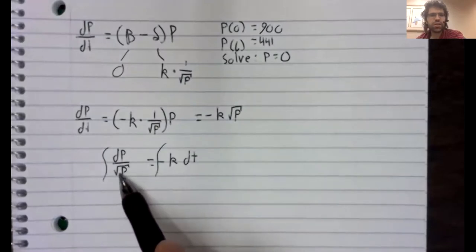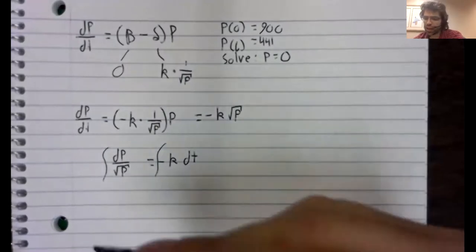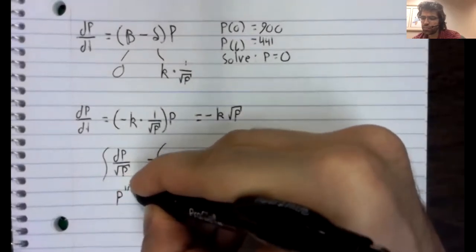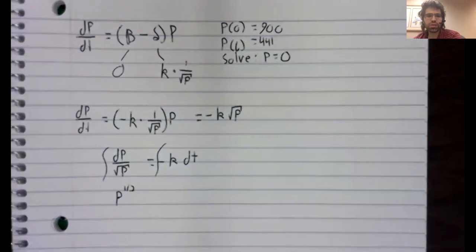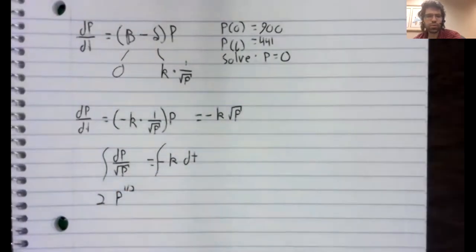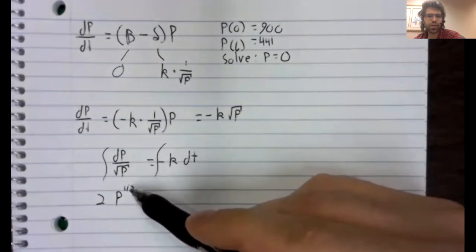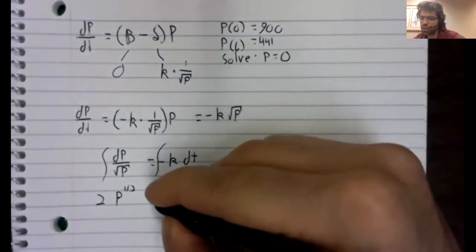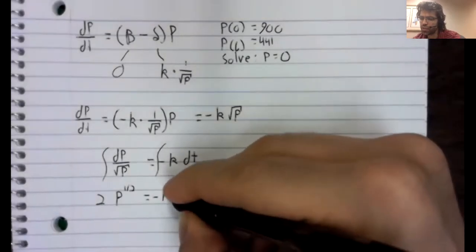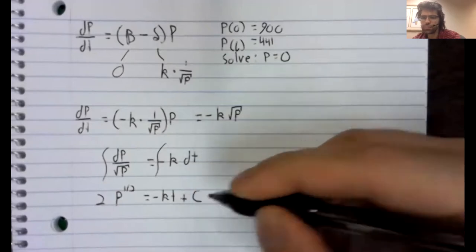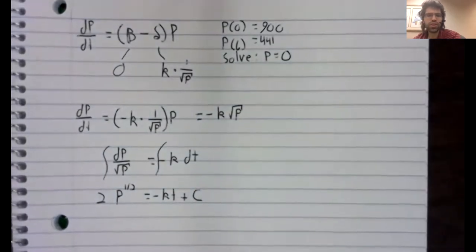This is P to the negative one half. So when we integrate it, it becomes P to the positive one half. But we also divide by one half. So two times the square root of P equals negative kt plus c.